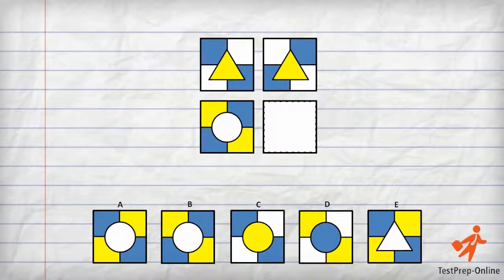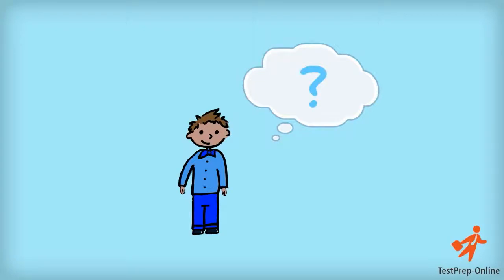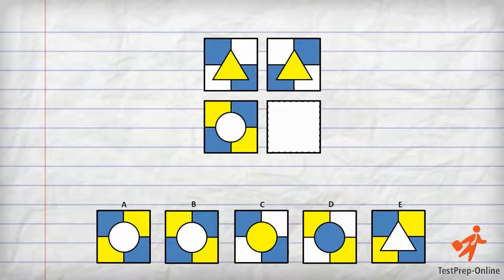Look at the figures in the two boxes of the top row of the example. These shapes go together in a certain way. Can you figure out how they go together? The shape in the left box is a yellow triangle and the shape in the right box is a yellow triangle. The shapes inside of the boxes in the top row are identical.